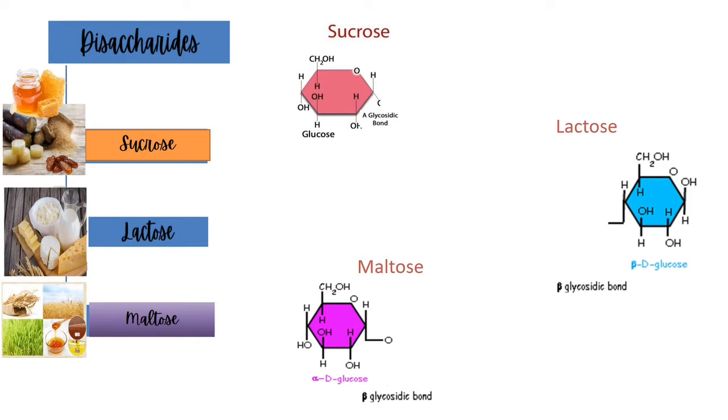Disaccharides are composed of sucrose, lactose, and maltose. Common among them is the monosaccharide glucose, which you may see at the right side. Each one has a monosaccharide glucose that is added with another monomer in order to form disaccharides.